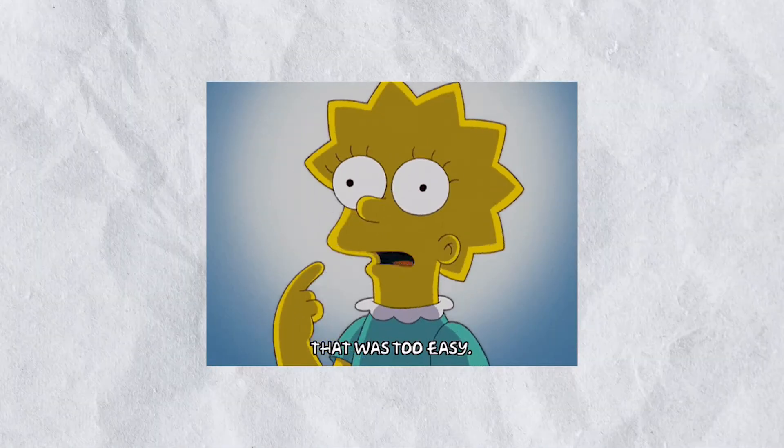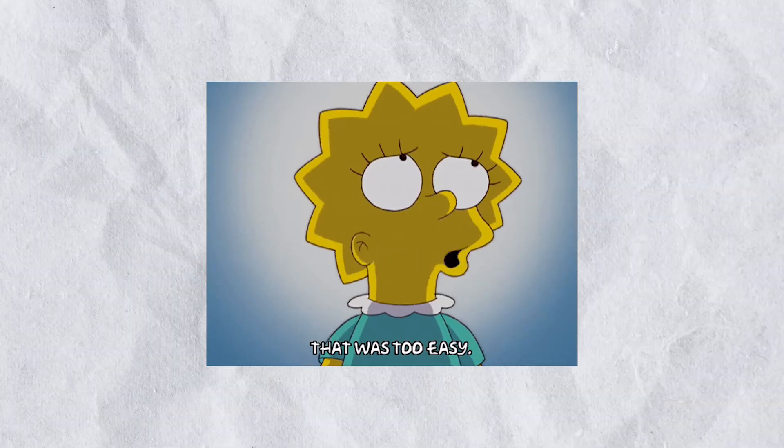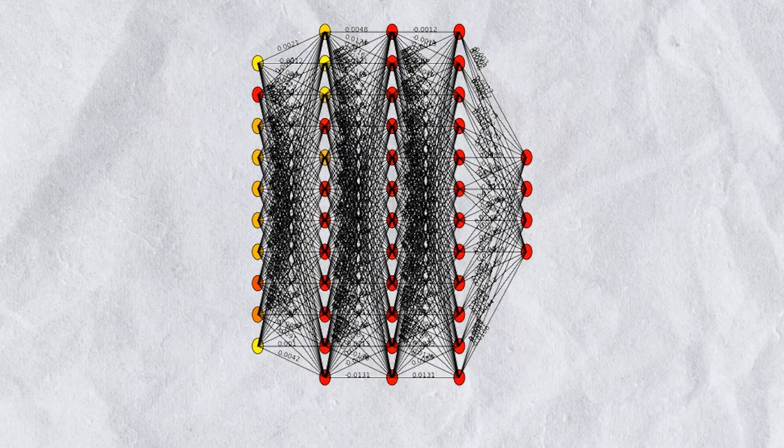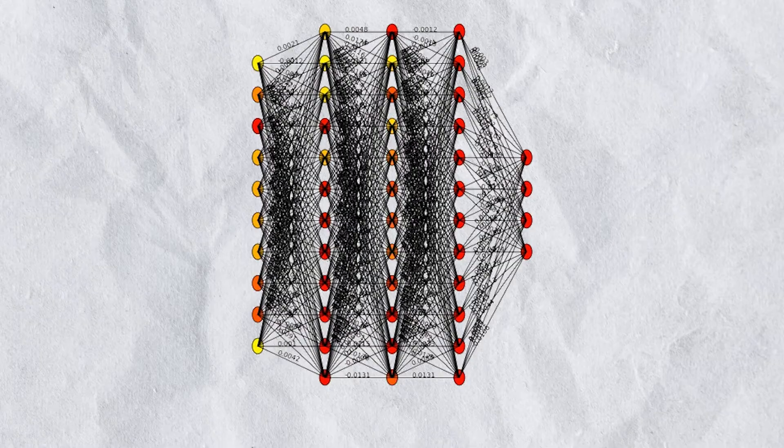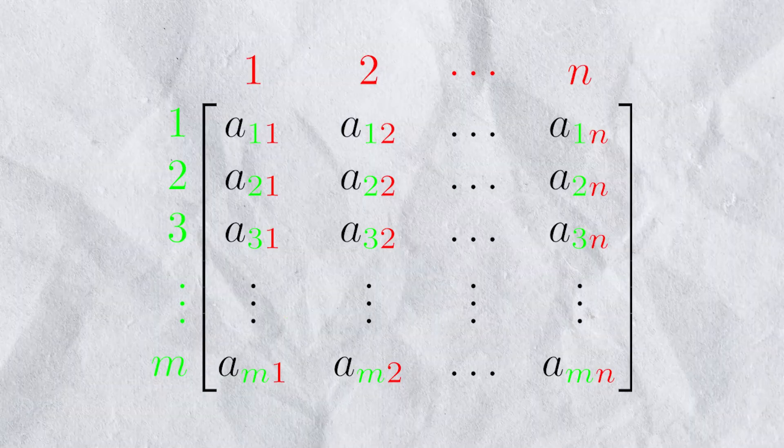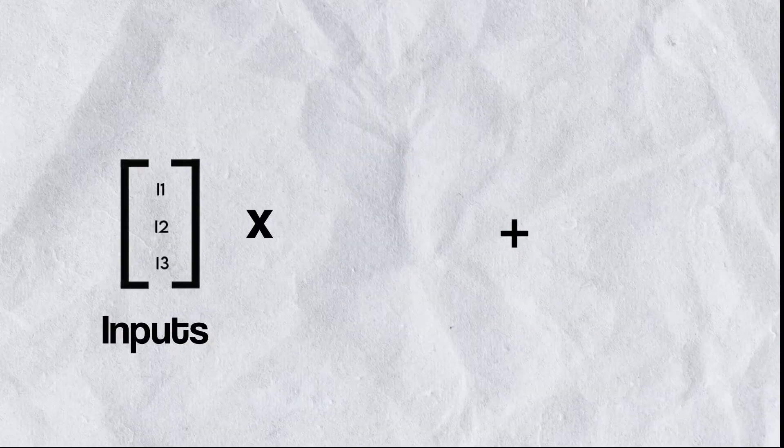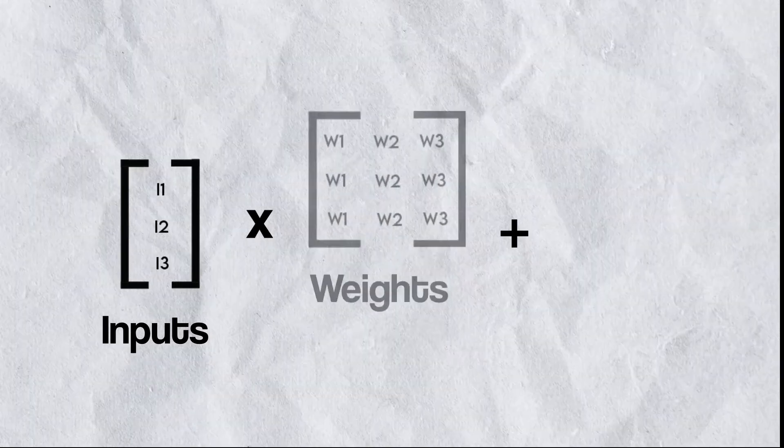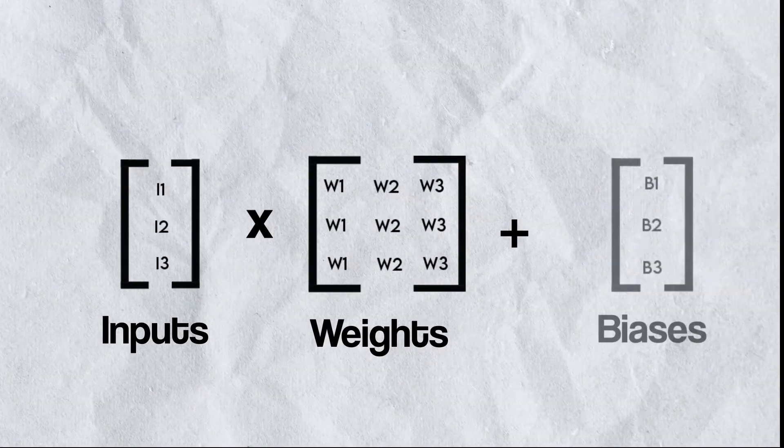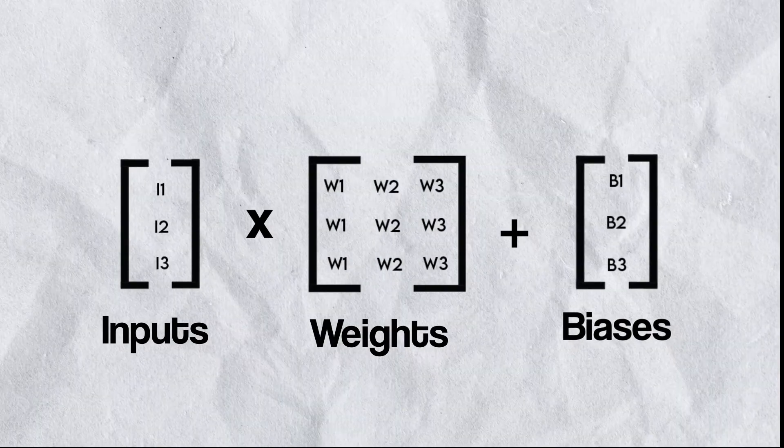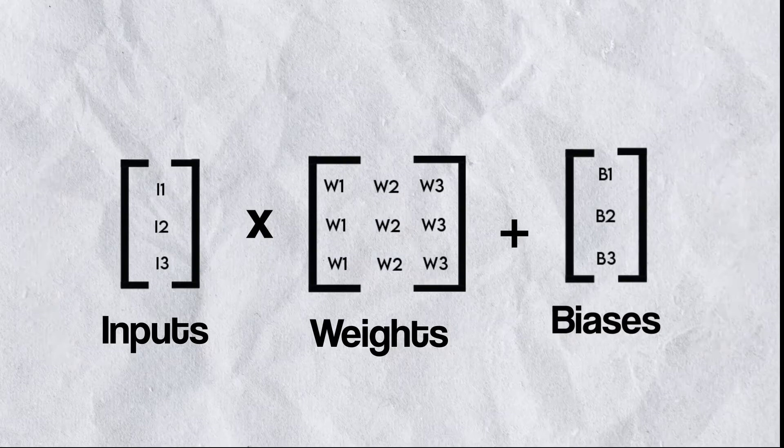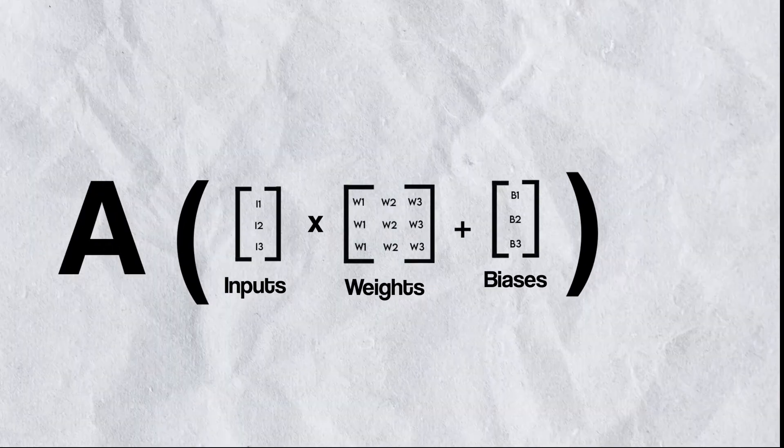That's all fine and well for a two-input neuron, but imagine there were hundreds or even thousands of weights and inputs to a single neuron. How would we solve this? That's where matrices come in. If we place all the inputs into a matrix and all the weights into another, we can just multiply them together and add them to a vector of biases. Then we take our results and pass them into our activation function.